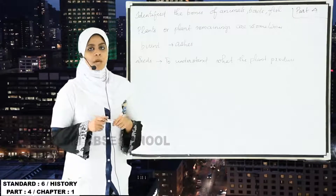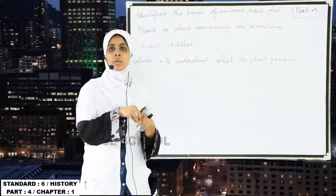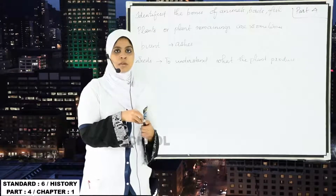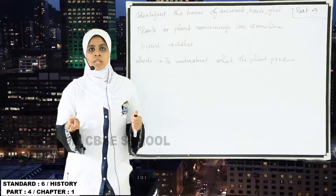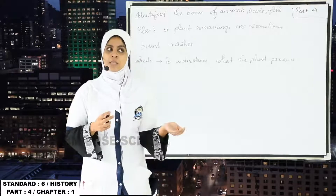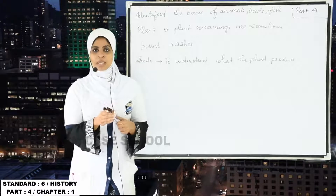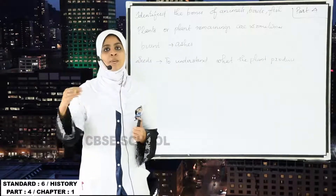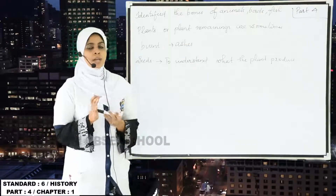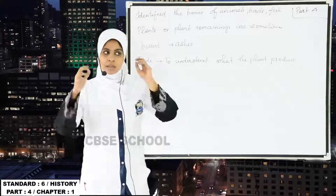So in today's class, we studied about AD and BC. AD is derived from the Latin words Anno Domini, meaning 'in the year of the Lord.' Writing the year 2007 can also be written as AD 2007, meaning 2007 years after the birth of Jesus Christ. BC means Before Christ, so 200 BC means 200 years before the birth of Jesus Christ. We also studied how historians and archaeologists studied the eating habits of people living in the past. That's it for today. Thank you. Assalamualaikum.